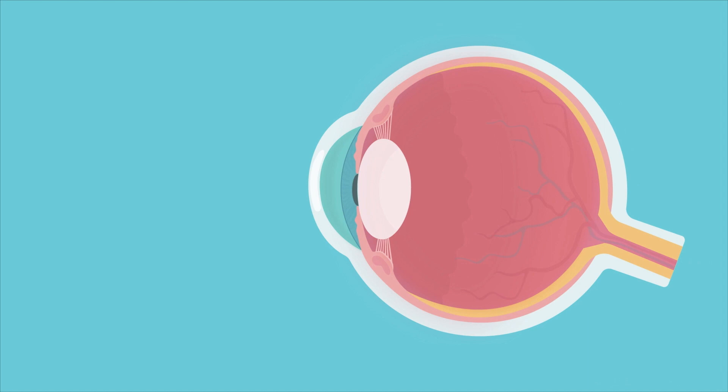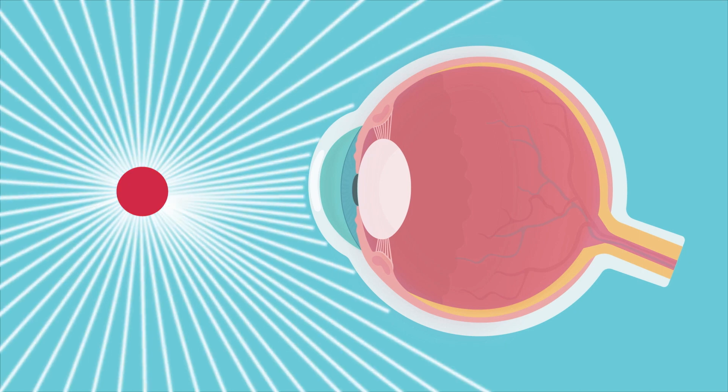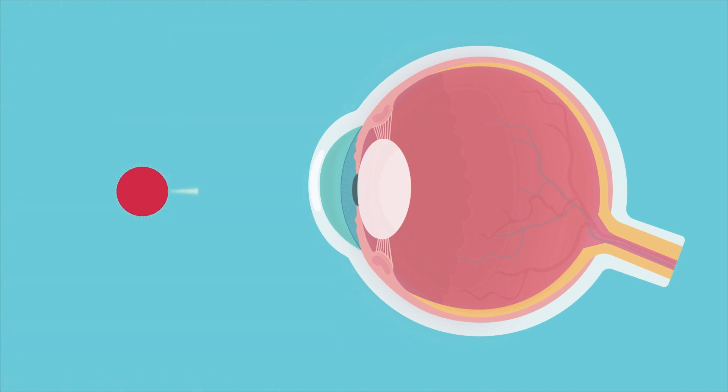To make it easy to understand, let's imagine an object that consists of a single point that we'll represent as this small red circle. When light hits that object, it gets reflected in all directions. For us to see that object, the reflected light must pass through the cornea and the pupil and then hit the retina, which is the inner layer of the posterior part of the eyeball.